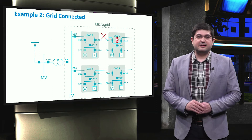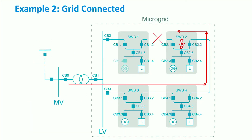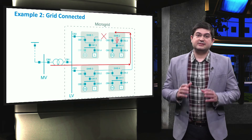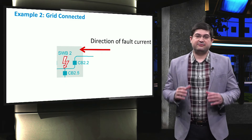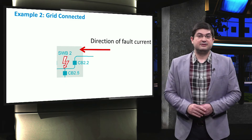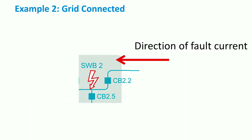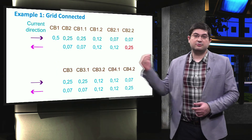Now let's assume that a second fault occurs inside switchboard 2. In this case, the fault current is provided again through the external grid, but unlike the previous example, the fault current is supplied by the feeder below. The fault current will be from the right-hand side to the left-hand side direction. Typically, if directional relays are used, then the setting of the tripping time will be different in various directions — from left to right or from right to left.